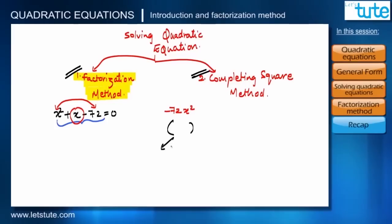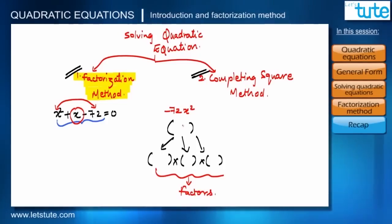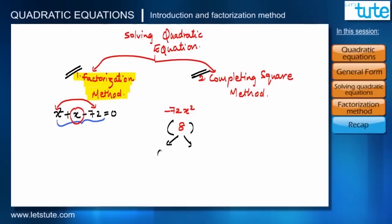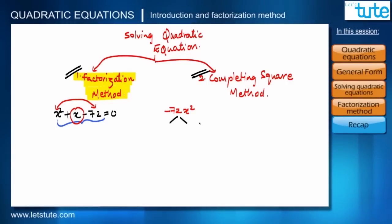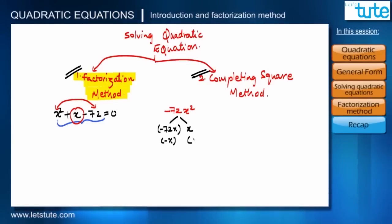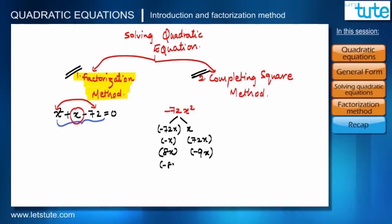Let me explain factors. When we express any number as a product of numbers, those numbers are called factors. For example, 8 = 2 × 2 × 2, so 2 is a factor of 8; also 8 = 4 × 2, so 4 and 2 are factors. Now for −72x², possible factor pairs include: (−72x, x), (−x, 72x), (8x, −9x), (−8x, 9x), and so on.